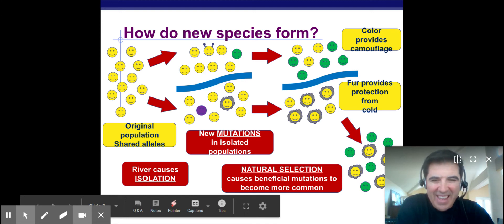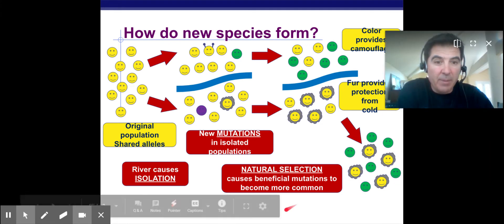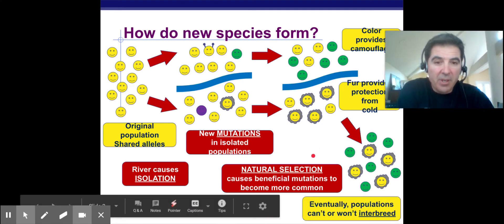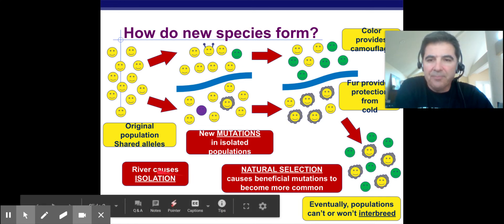So over time, because of natural selection and the fact that the beneficial mutations become more common, then you could have a whole new population. And this population may not be able to breed anymore. So if you even if you got them together, this population, if they met and were on the same side, either they couldn't breed or they wouldn't breed. So why the heck wouldn't they breed? Well, that's part of what we're going to talk about, which causes this thing called isolation.